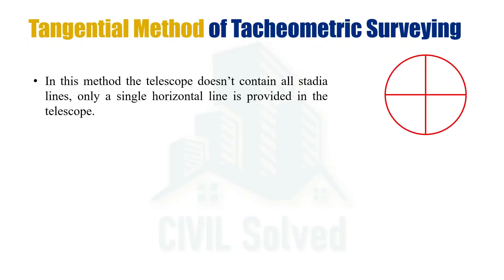Now if you compare this tangential method of tacheometric surveying with the stadia method of tacheometric surveying — in the stadia method, three different readings were taken: the upper and lower stadia readings were used to determine the horizontal distance, and the central stadia reading was used to determine the vertical distance. But in the tangential method we don't have three stadia readings, but only a single stadia reading is noted down, which is the central stadia reading.